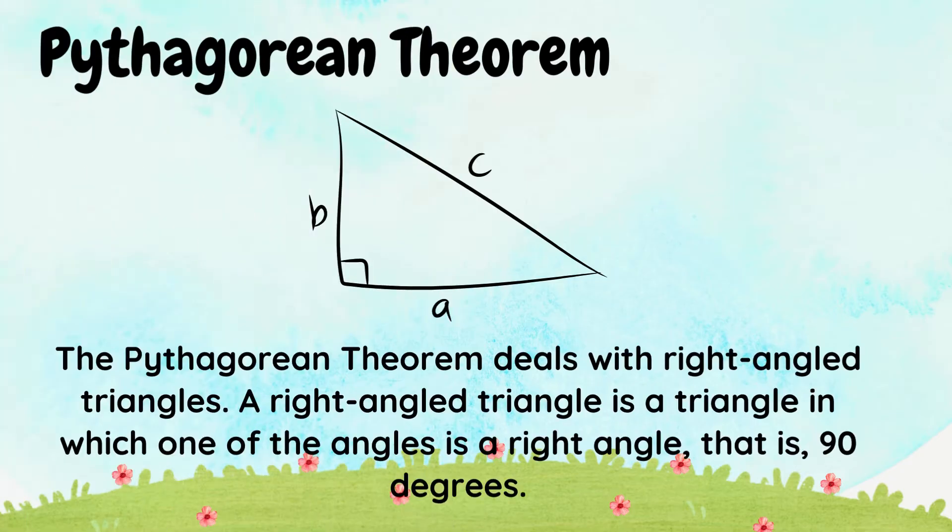The Pythagorean Theorem deals with right-angled triangles. A right-angled triangle is a triangle in which one of the angles is a right angle, that is, 90 degrees.